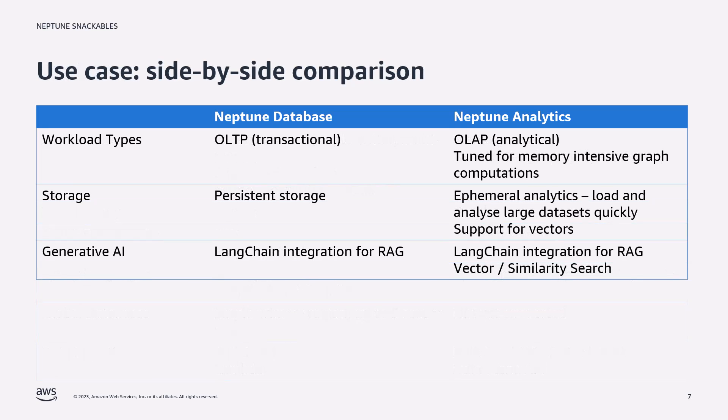Let's look at how they compare when it comes to the types of graph workloads customers want to run. Neptune database is an OLTP database — it supports more transactional workloads. In contrast, Neptune Analytics has been designed to support analytical workloads and is tuned for memory-intensive graph computations, whereby you're querying across large portions of your graph data in order to identify similarities, centrality, and so on.